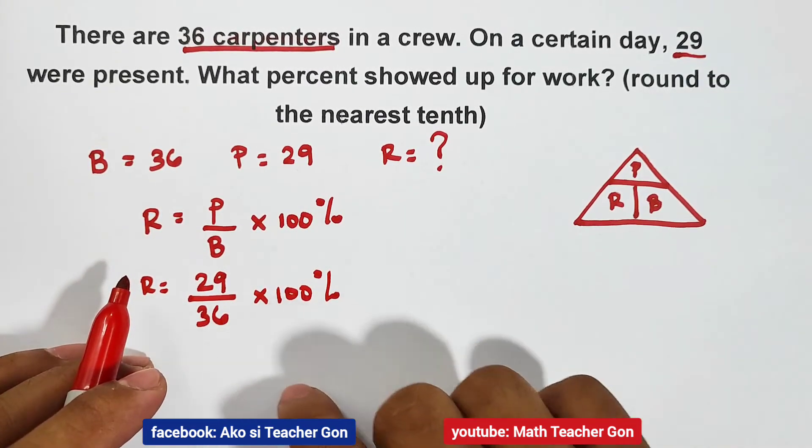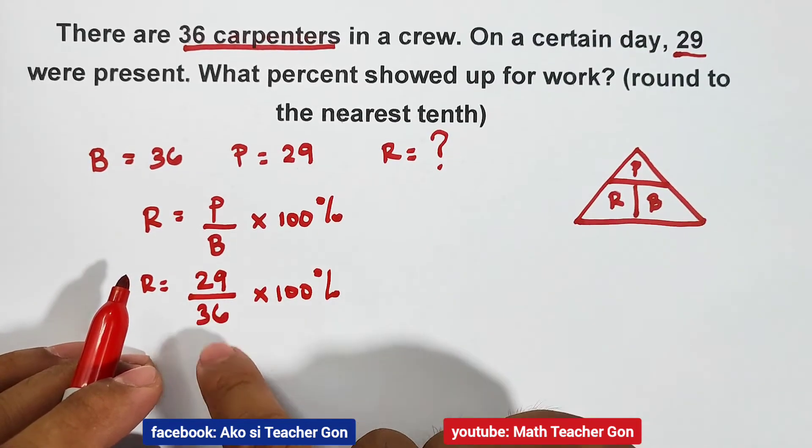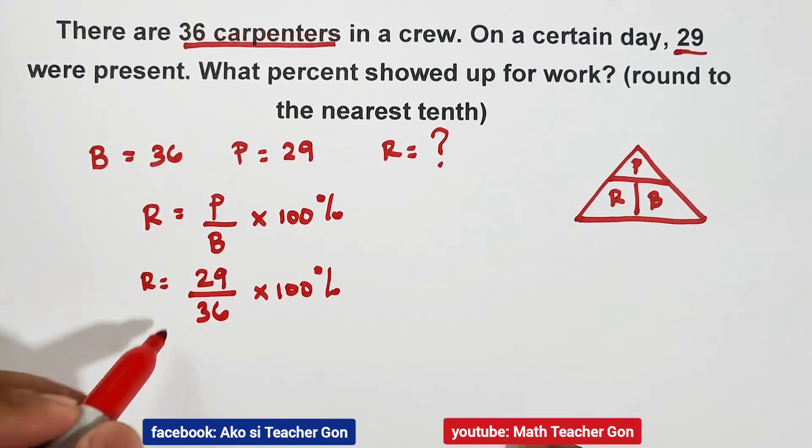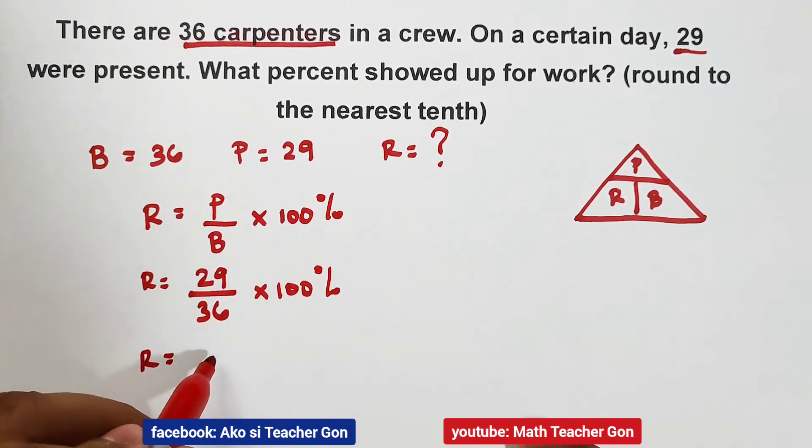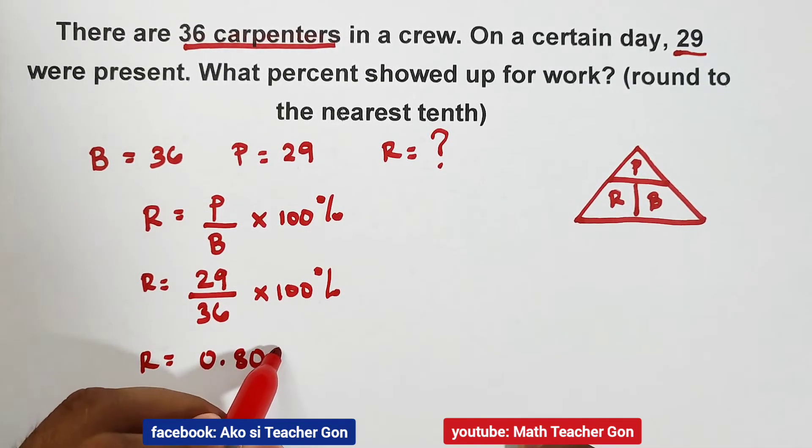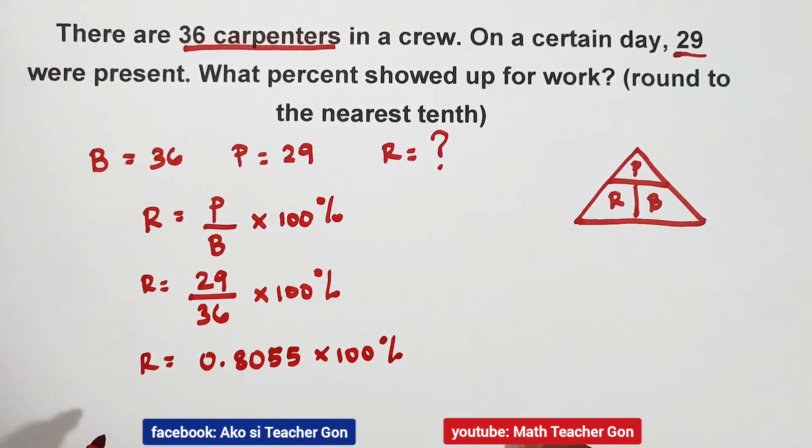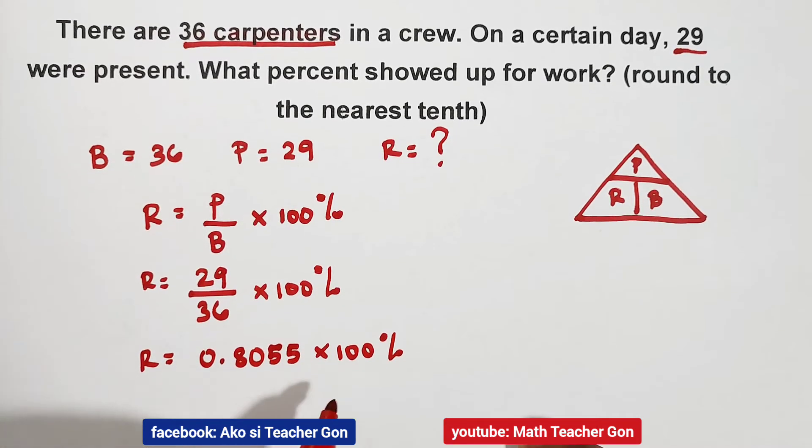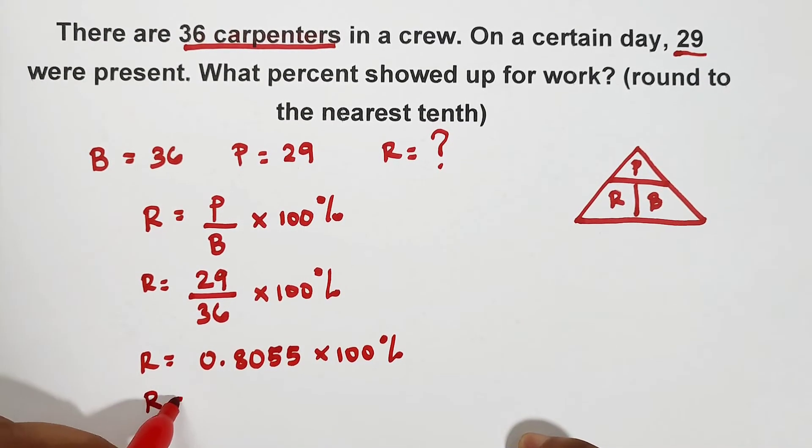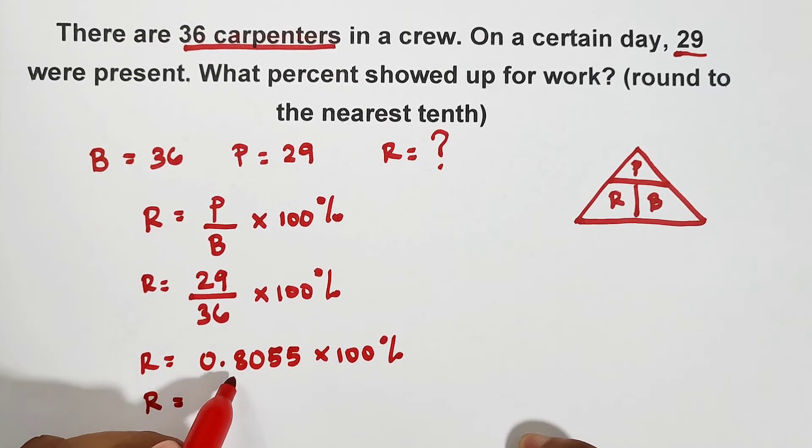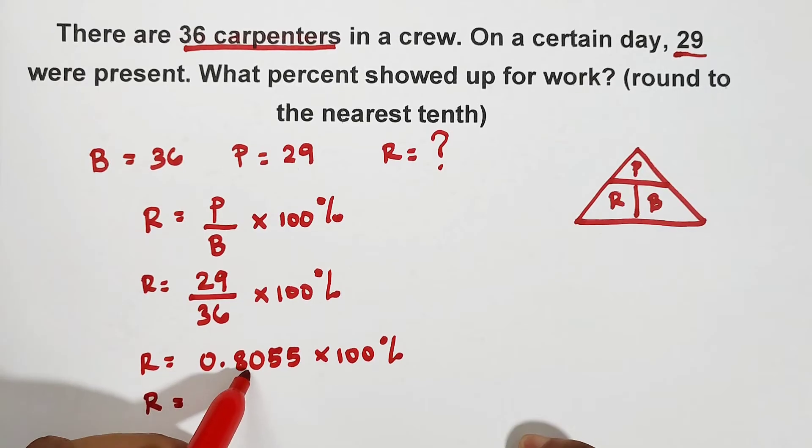Now, if you divide this manually, it's a bit long. And if you use a calculator, your R here is 0.8055 times 100%. There's more to it, but I only wrote four significant digits. Now when you multiply this by 100%, move two decimal places: one and two. That is 80.55%.